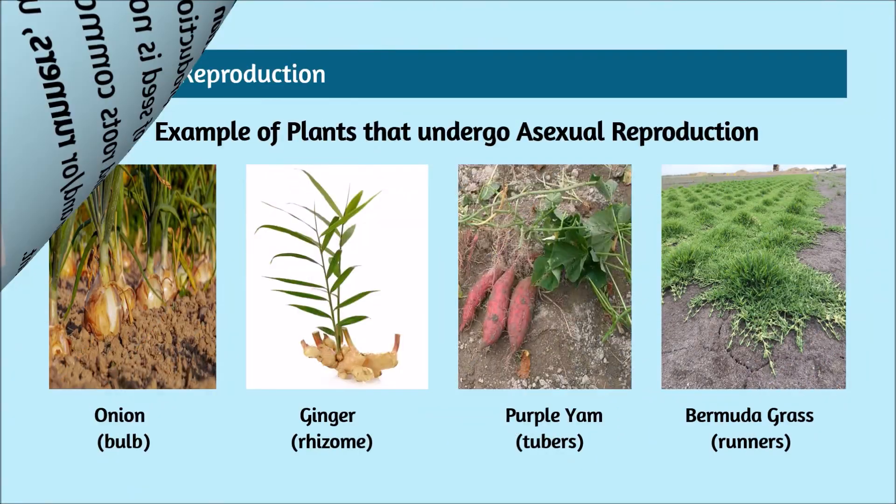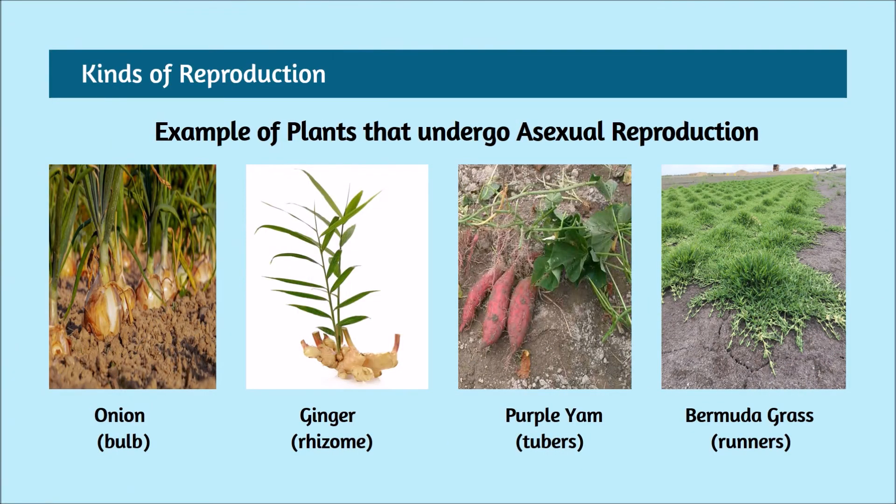Examples of plants that undergo asexual reproduction: onion via bulb, ginger via rhizome, purple yam via tubers, and bermuda grass via runners.